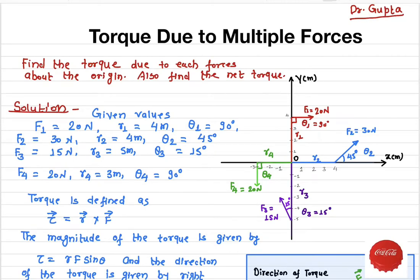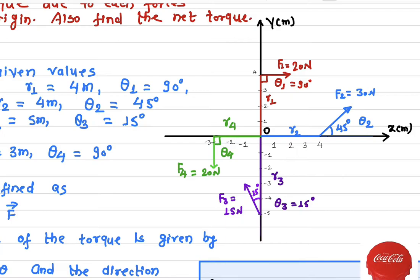In this video I'll talk about the torque due to multiple forces. Here on an xy-plane we have different forces acting onto it — force F1, force F2, F3, and F4 — all acting in different directions. What we need to find out is what is the torque due to all these forces about the origin.